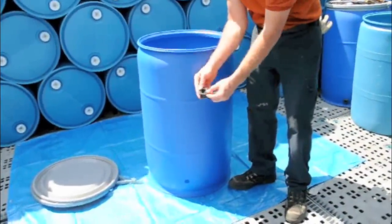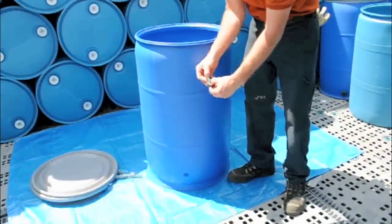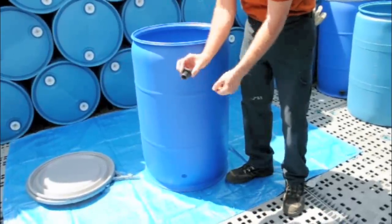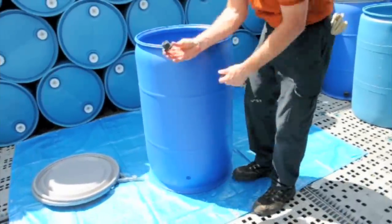Set the barrel right side up. Get the long threaded end of the bulkhead fitting and place a gasket on it.